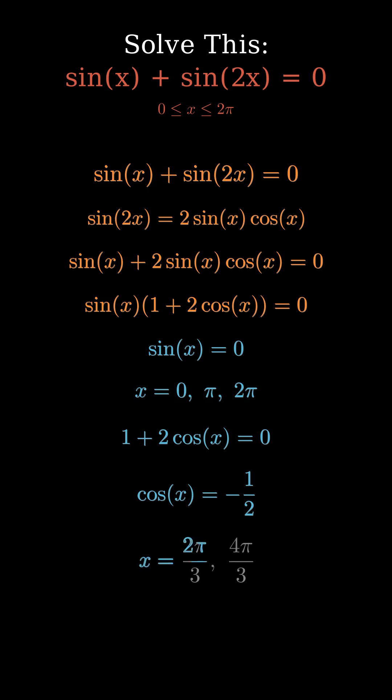Cosine x equals negative 1 half at two specific angles in the unit circle, 2π over 3 and 4π over 3. These are in the second and third quadrants.